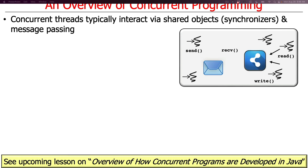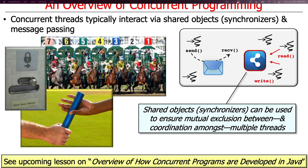Concurrent threads almost always interact with each other — unlike parallel systems where threads interact very infrequently. In concurrent programs, threads typically interact in two key ways: using shared objects, which are essentially synchronizers, and/or by message passing. We're going to discuss both of these techniques.